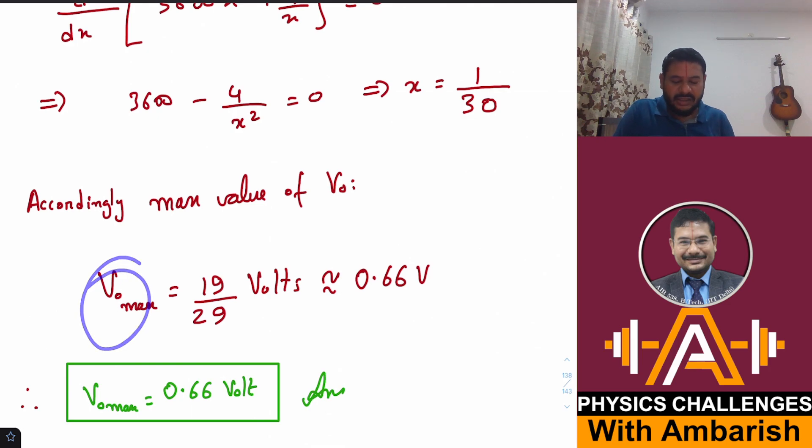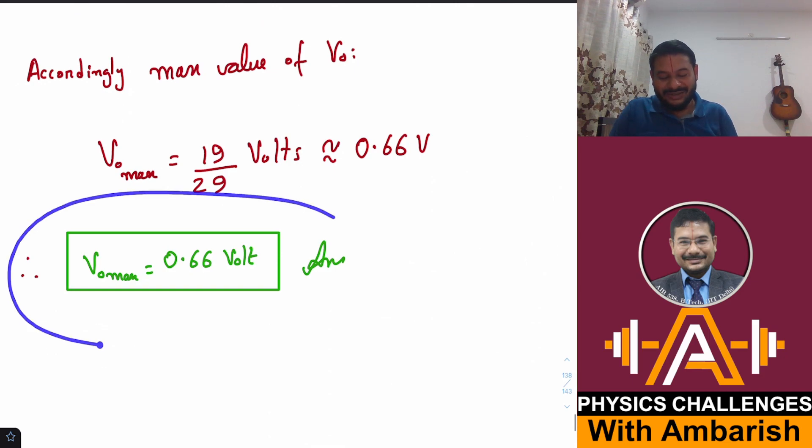Maximum V_output comes as 19/29 volts, which is approximately 0.66 volts. So this is our final answer.